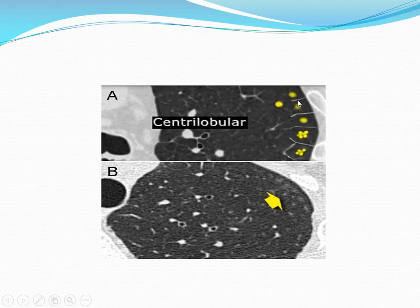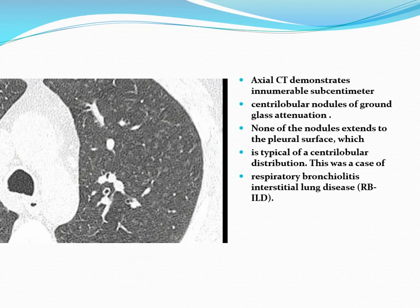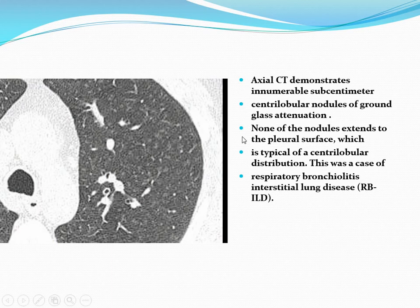Here we can see multiple interlobular septa and multiple nodules within the lobules. None of the nodules extend to the pleural surface, which is typical of centrilobular distribution. On this image, we can see multiple ill-defined centrilobular ground-glass opacities. Axial CT demonstrates innumerable sub-centimeter centrilobular nodules of ground-glass attenuation; the nodules do not extend to the pleural surface, which is typical of centrilobular distribution. This was a case of respiratory bronchiolitis.